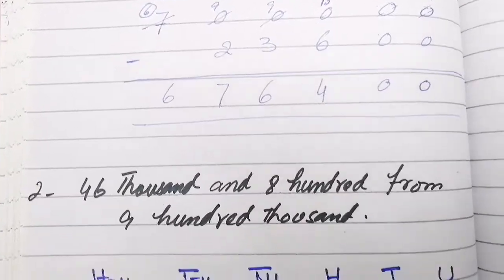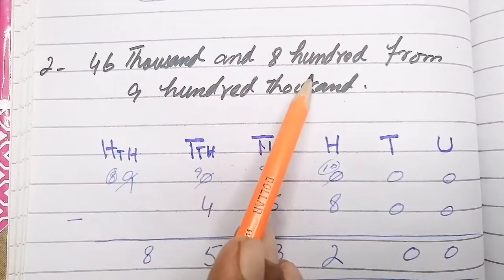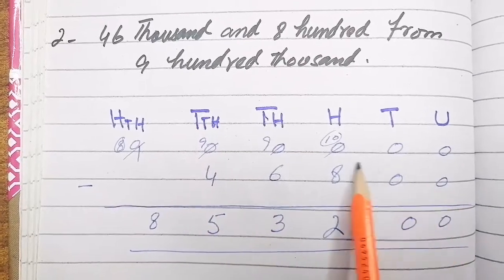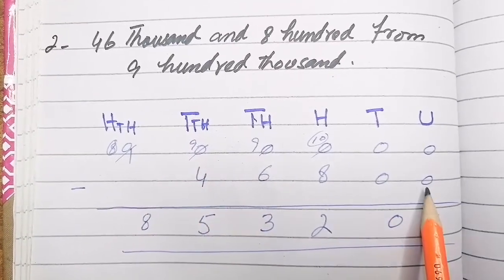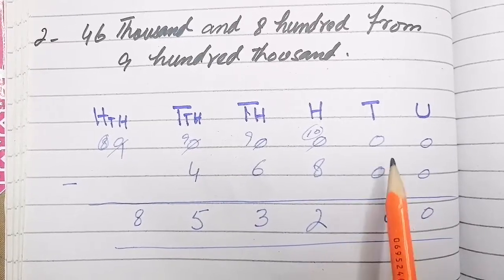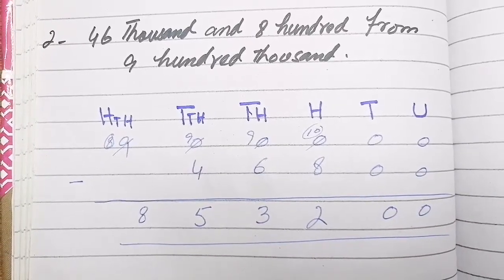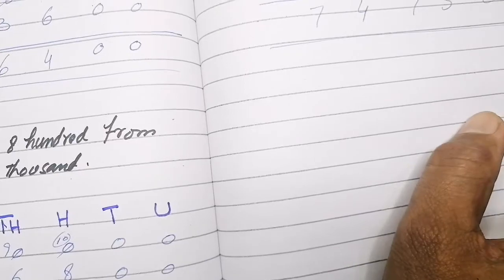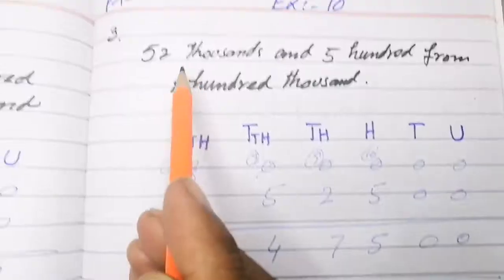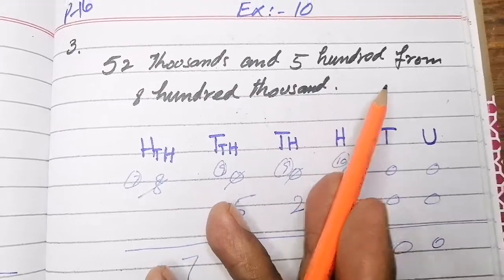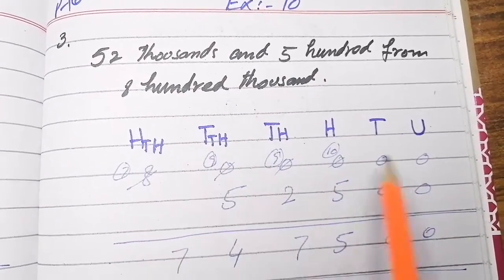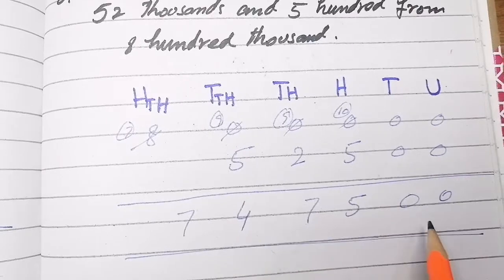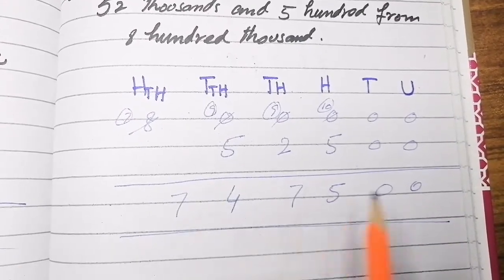Question 2: subtract 46800 from 900000. Write the place value chart. 900000 is the bigger number on top and 46800 is the smaller number below — subtract accordingly. Question 3: subtract 50500 from 800000. Write 800000 on top as the bigger number and 50500 below, then subtract. The working is shown on screen.